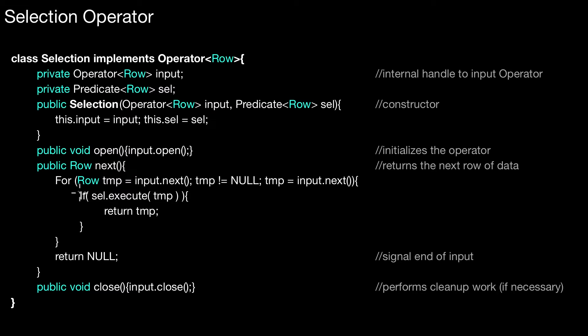In this loop we retrieve the next element from the input and assign it to this temporary variable. We only run into the loop if this is not equal null - if we're not at the end of the stream. If temp is not equal null, we execute the actual filter condition, this predicate. We call sel.execute(temp). Only if the predicate returns true with this specific row do we actually return the row.